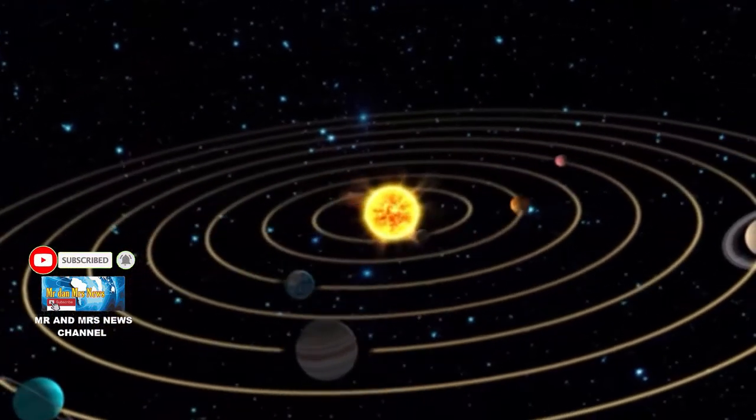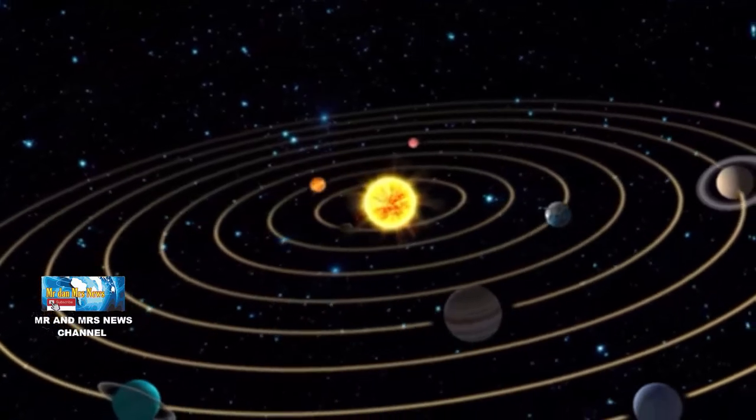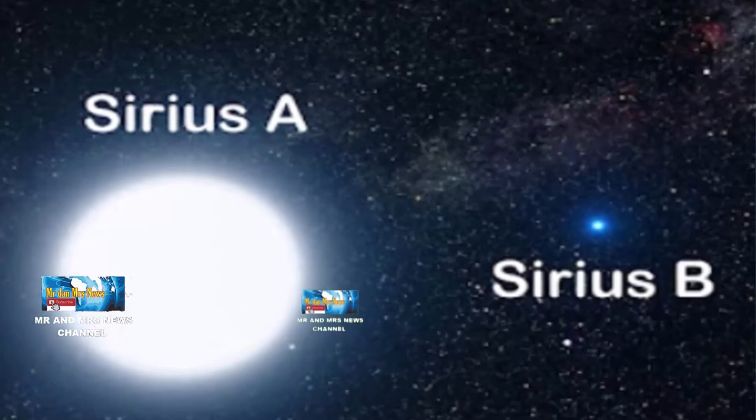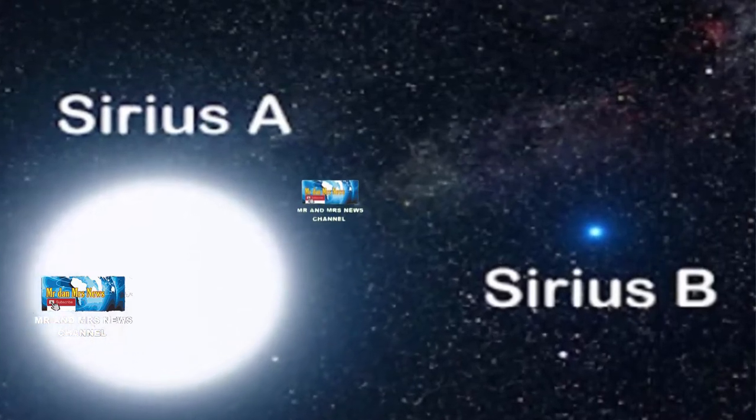Sementara itu, Sirius B merupakan kecerlangan visual plus 8,44 dan termasuk ke dalam kelas spektrum DA2 yang menandakan bintang ini merupakan bintang katai putih.